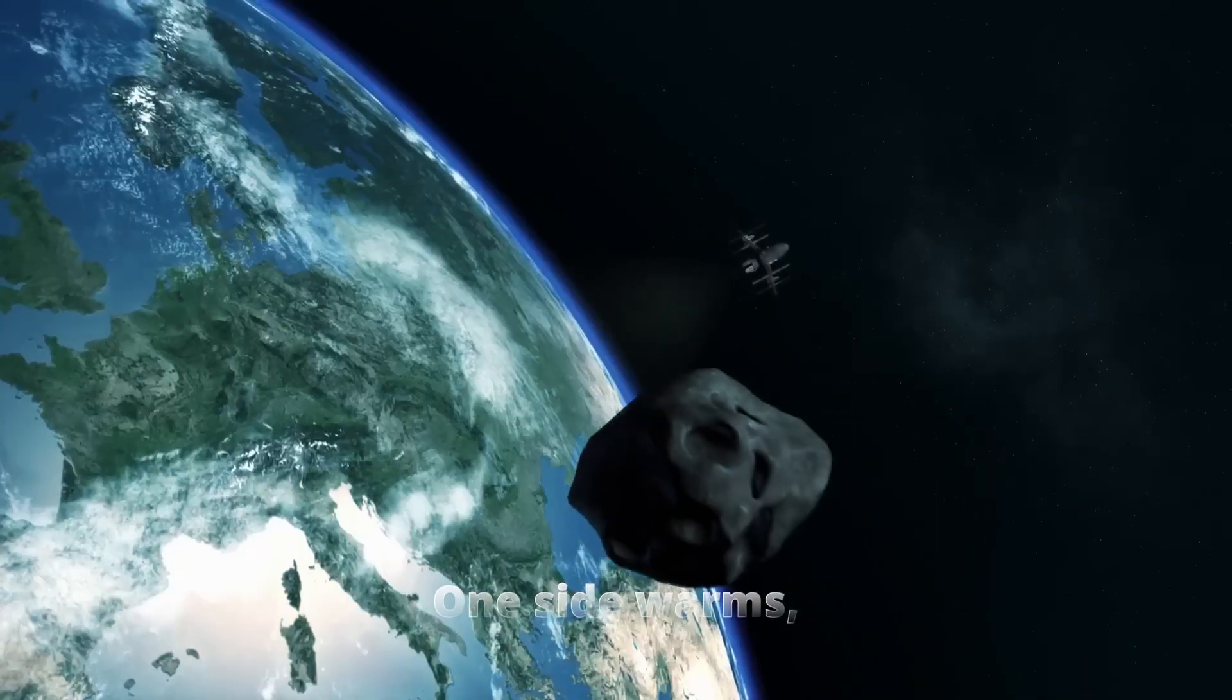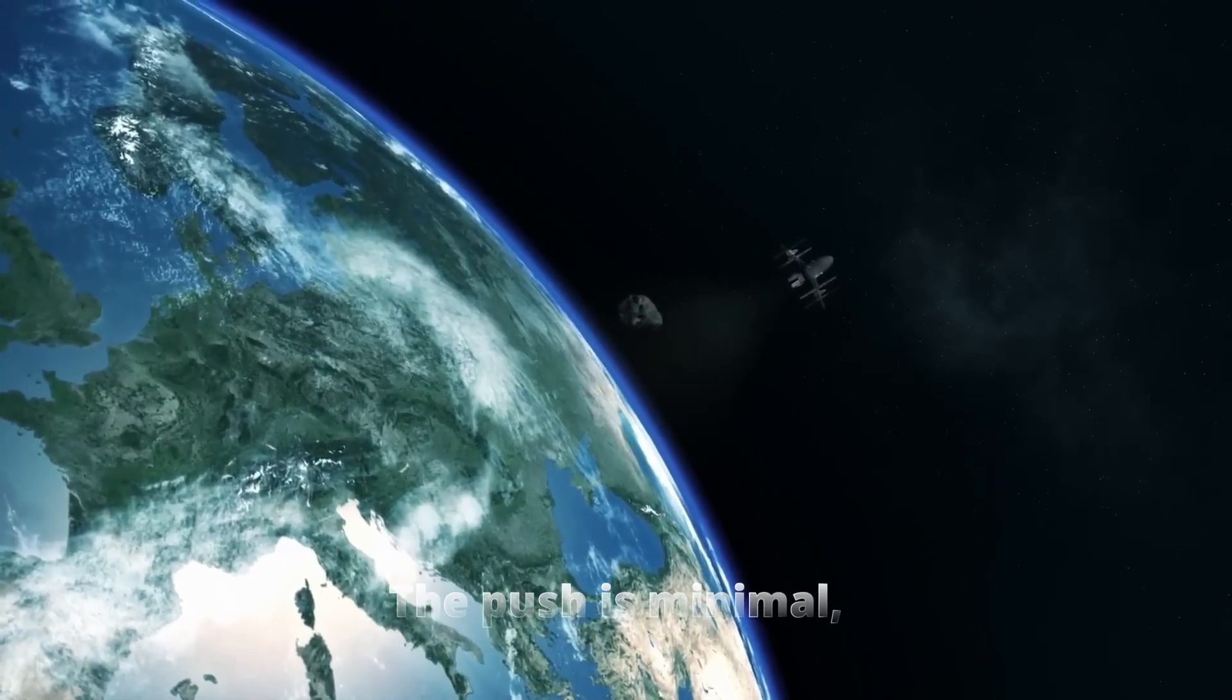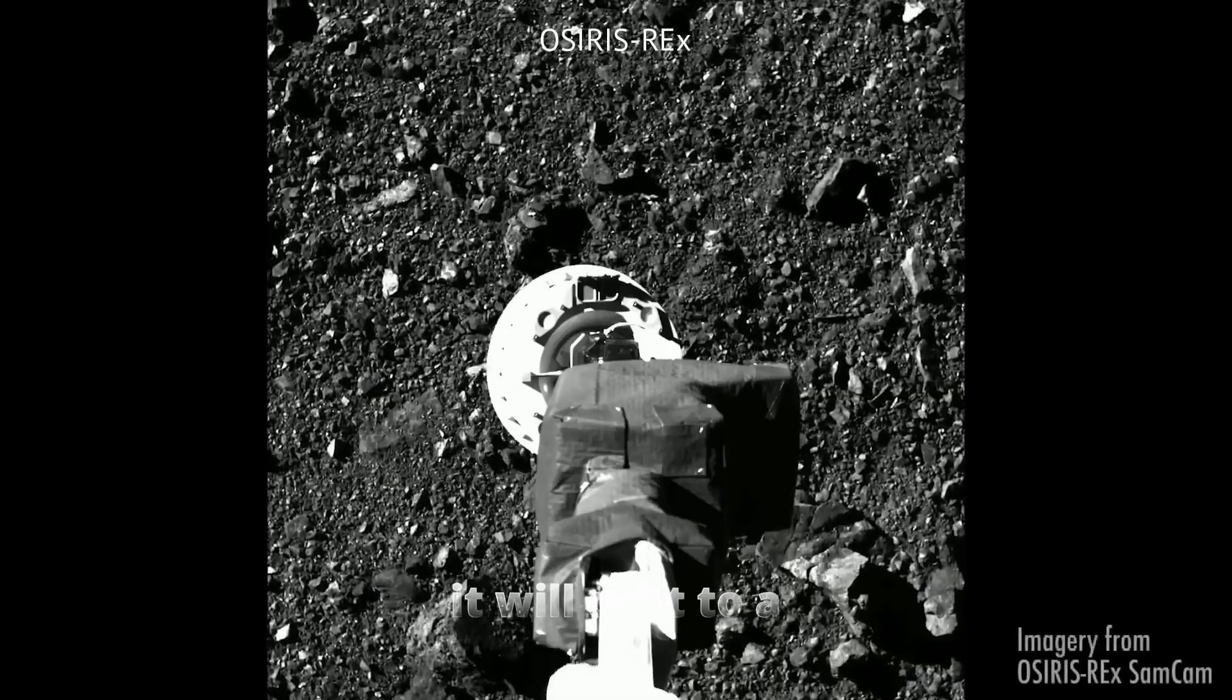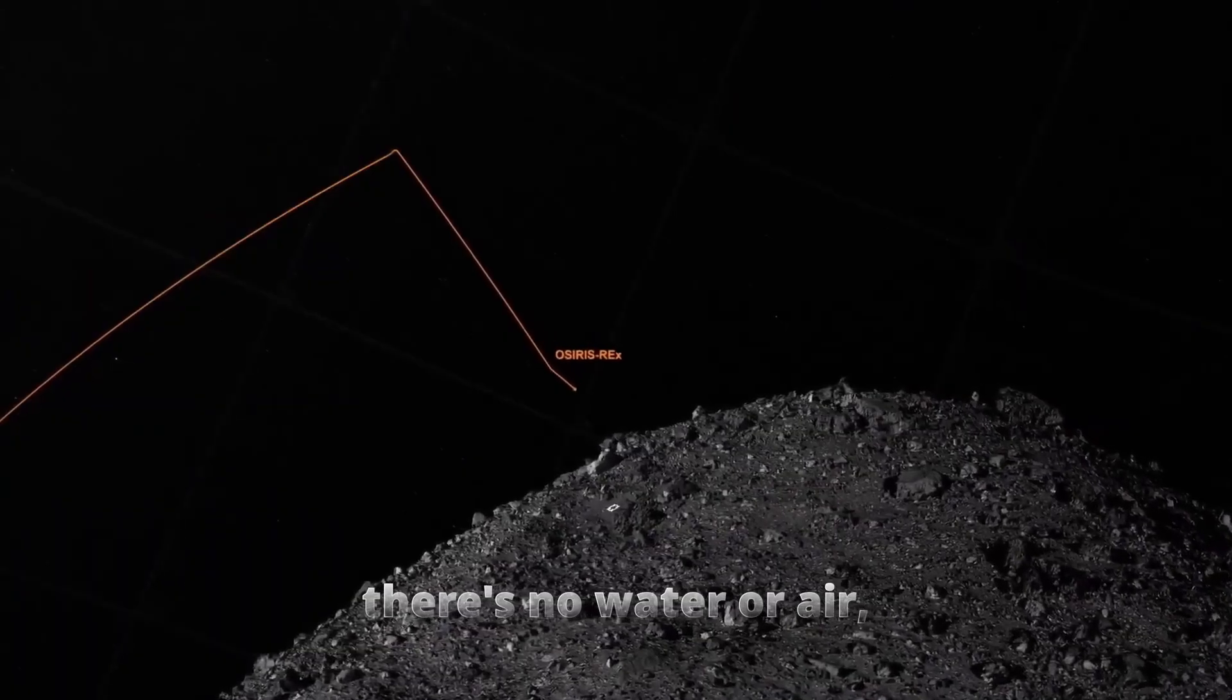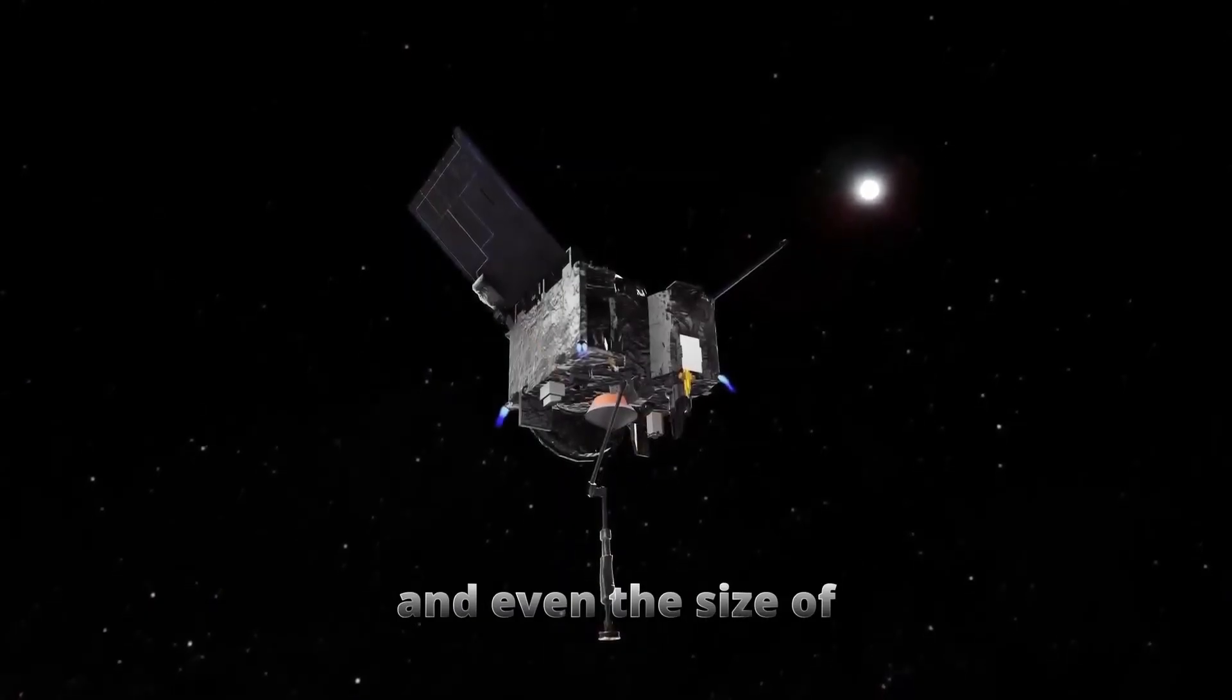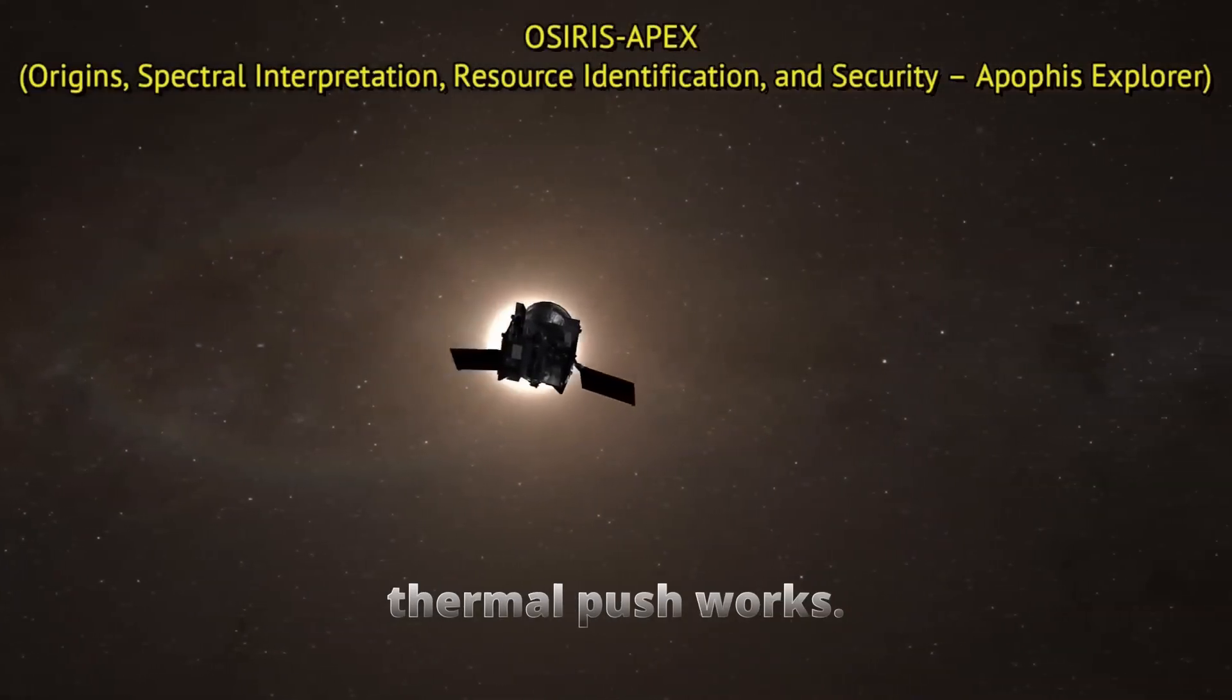Think of it like a beach ball spinning under the sun at the pool. One side warms and the surrounding air expands ever so slightly, nudging it in the water. The push is minimal, almost laughably small. But if the ball spins all afternoon, it will drift to a different spot than you expected. In space, there's no water or air, but the principle is very similar. The spin rate, the tilt of the rotation axis, and even the size of pebbles on the surface can control how that thermal push works.